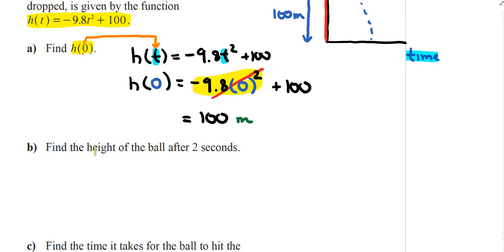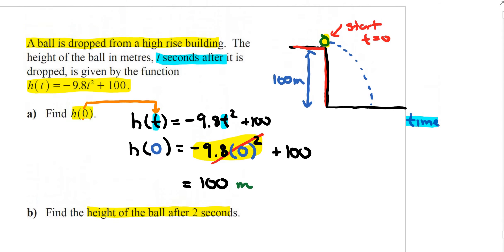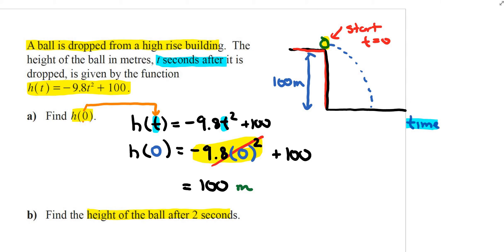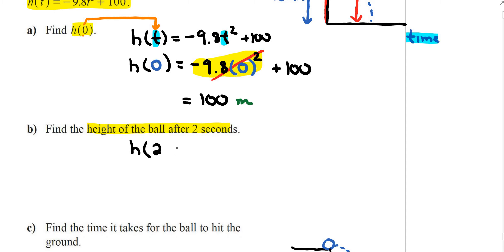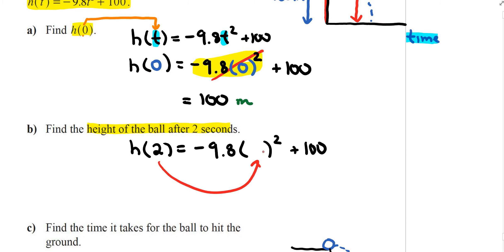For part B, I need to find the height of the ball after 2 seconds. Looking at the diagram, after 2 seconds the ball might be somewhere lower — so time equals 2 seconds. The question is: what is the height at that point? I'm looking for h(2), meaning the t variable gets replaced with 2 everywhere in the equation.